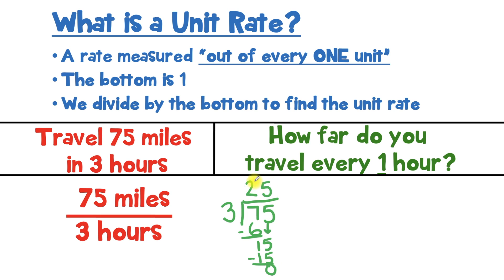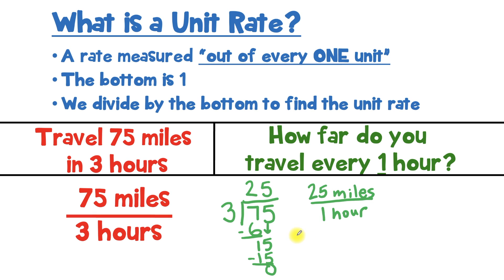And that zero remainder tells us we're done and gives us our answer. But what exactly does this mean? This means we can travel 25 miles for every one hour. And this is our unit rate. Sometimes you'll see it written in words and it'll look just like this. Most times you'll write it like this, but all times you'll read it like this.